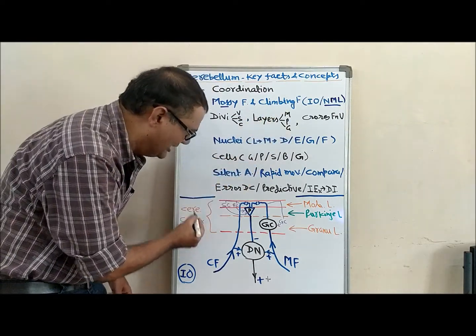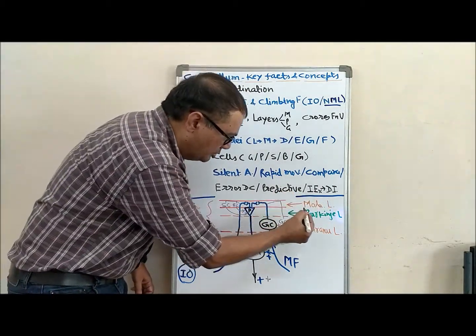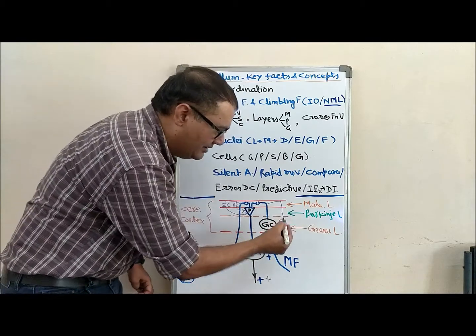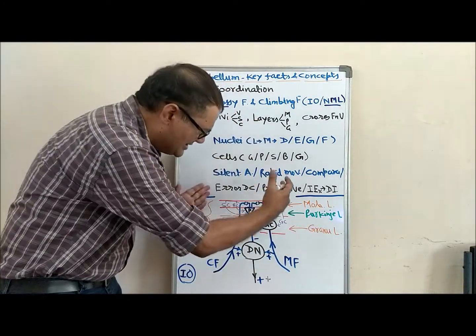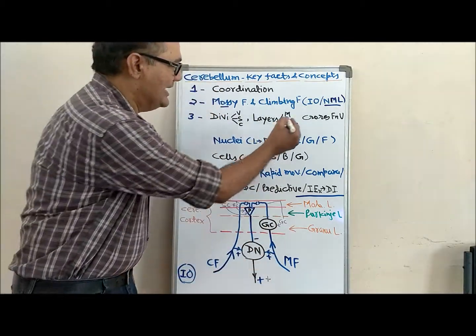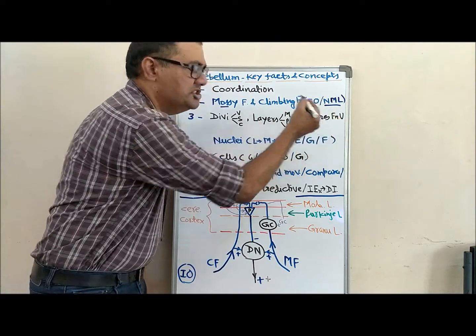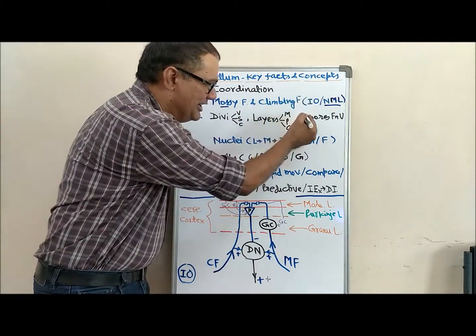The outer molecular layer, medium Purkinje cell layer, and inner granular cell layer. This shows one functional division of cerebellum. Three such functional units are present in cerebellum. Three core functional units ABC in cerebellum.